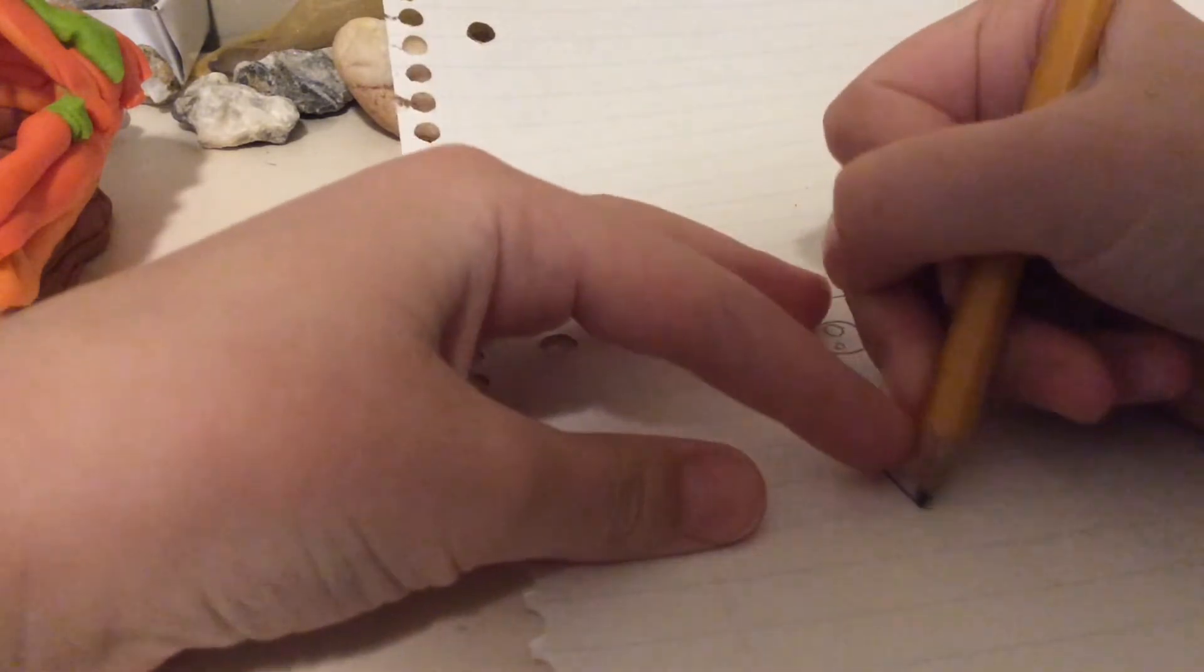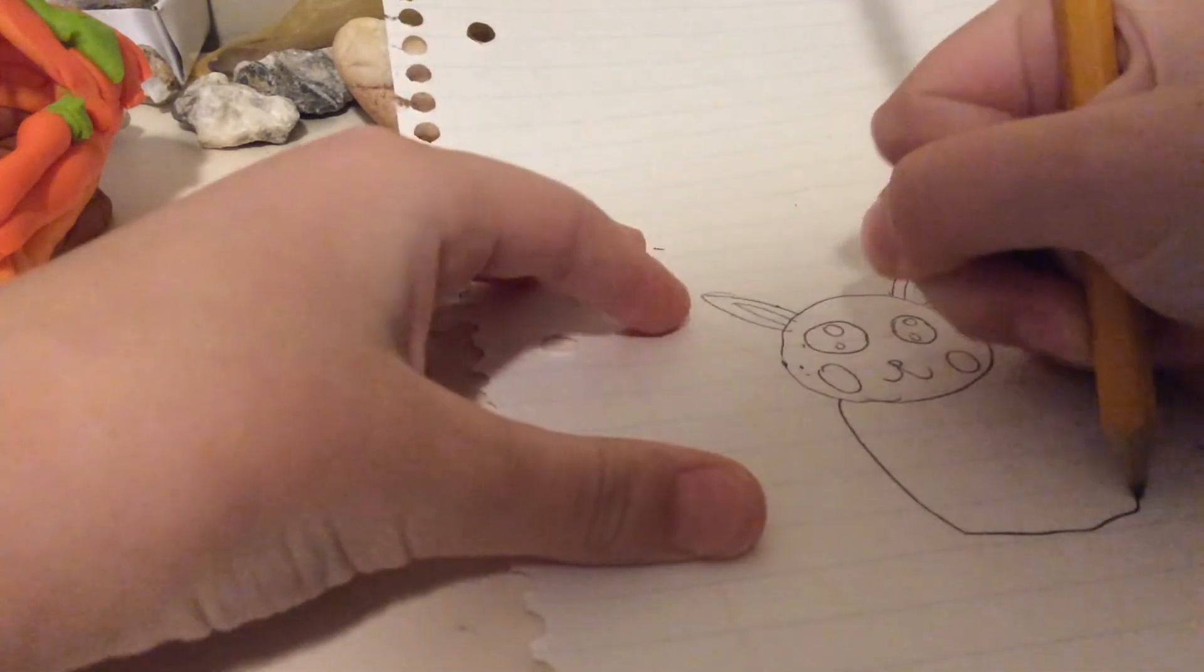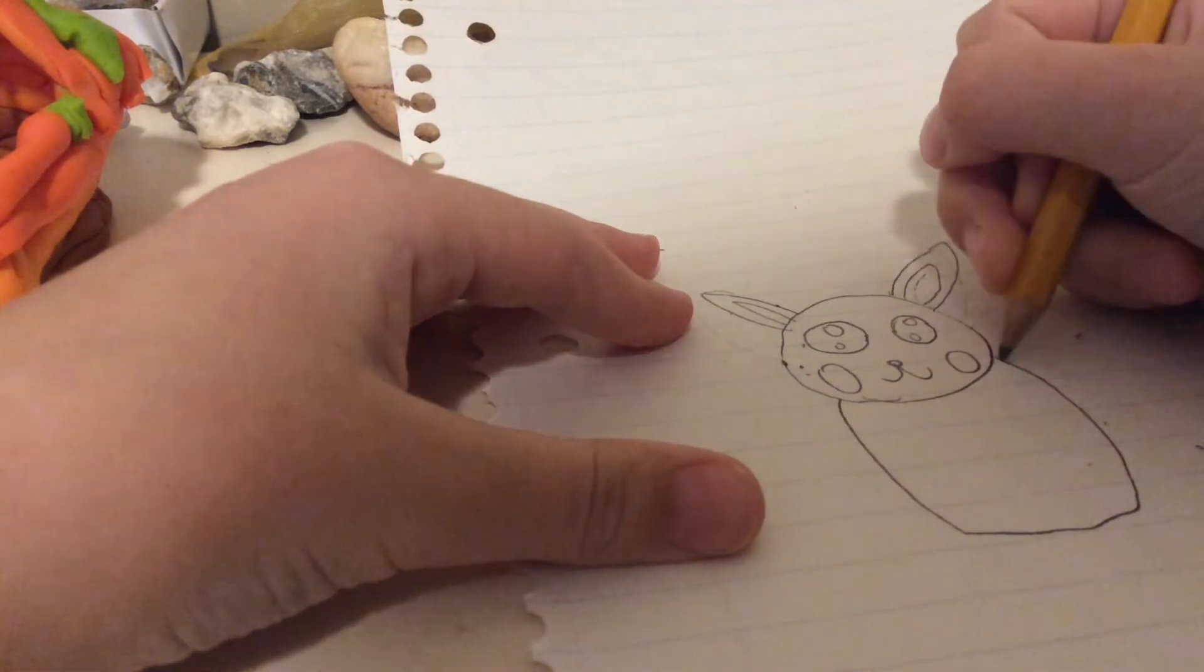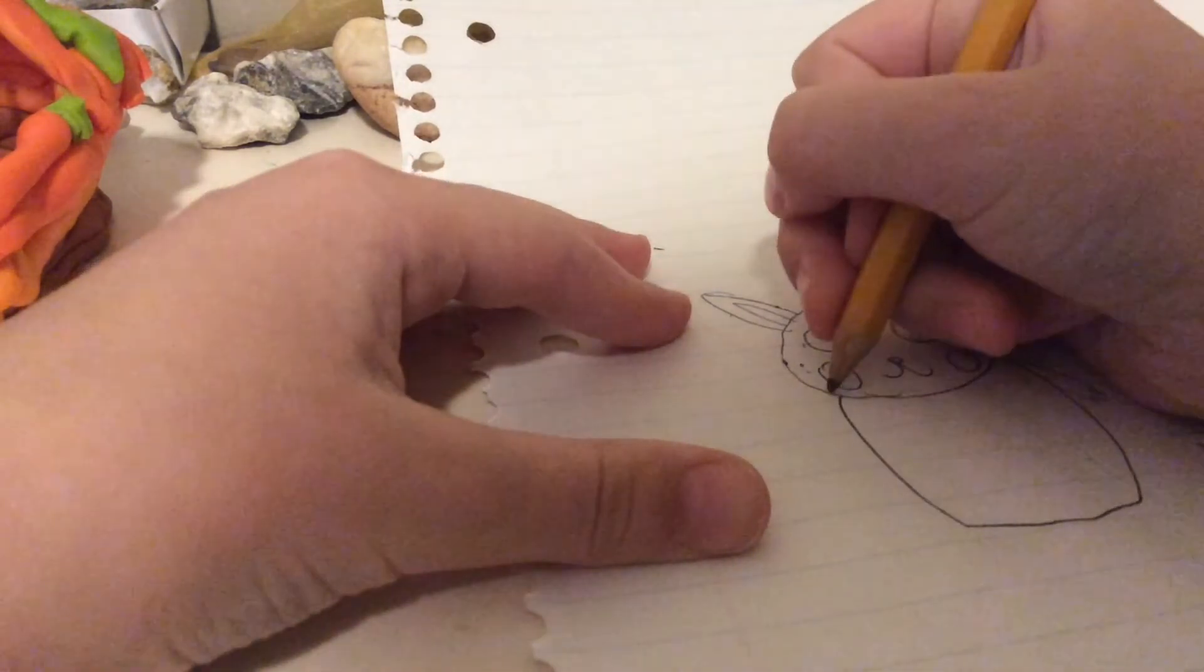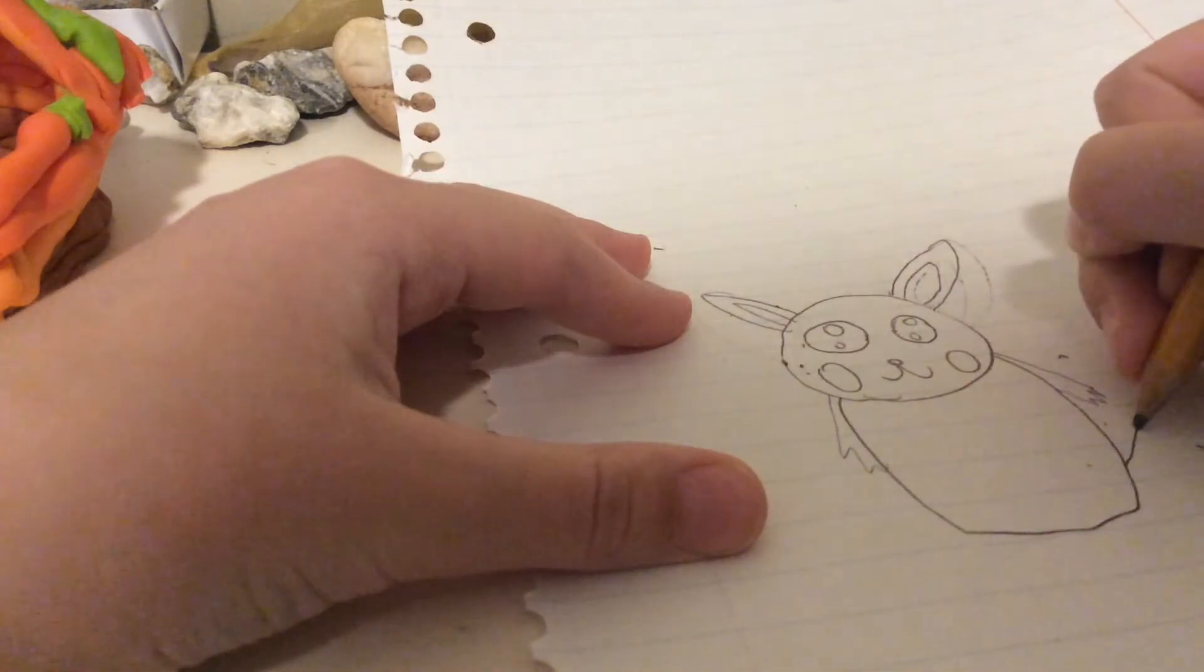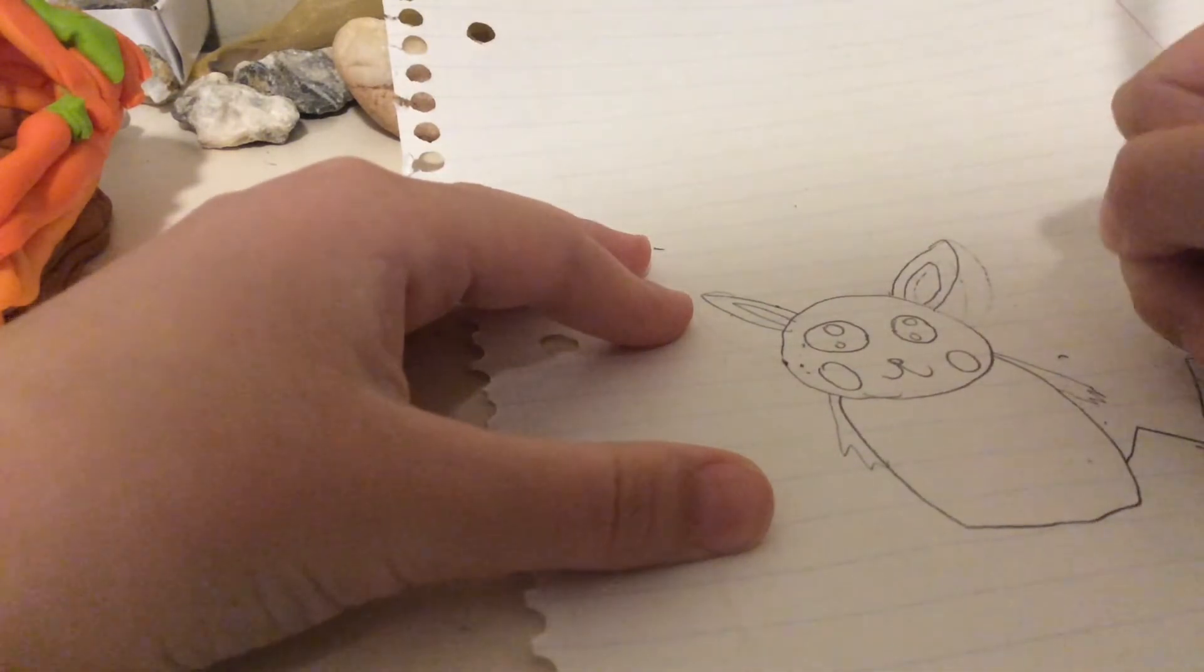And make a body like this, make arms that come out, and the tail is like a zigzag.